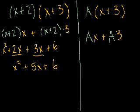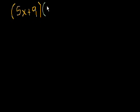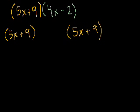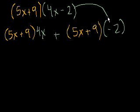Let's do a couple of problems. And hopefully, it'll hit the point home. Let's say I had 5x plus 9 times 4x minus 2. Well, once again, that equals 5x plus 9 times 4x, and then plus 5x plus 9 times minus 2. This minus 2 is here, and this 4x is here. And now we just multiply it out.